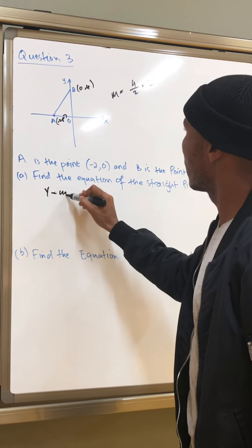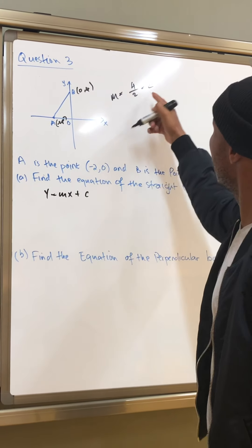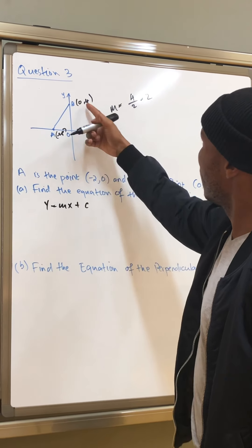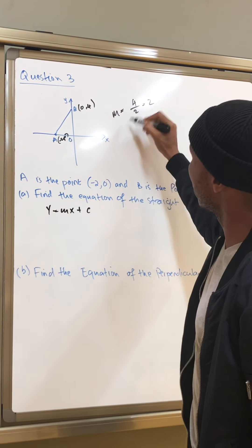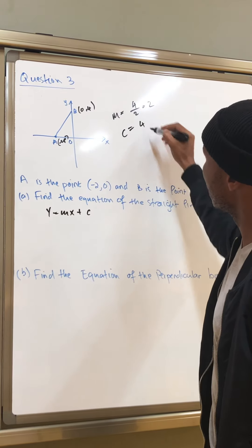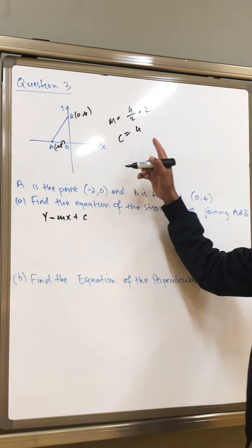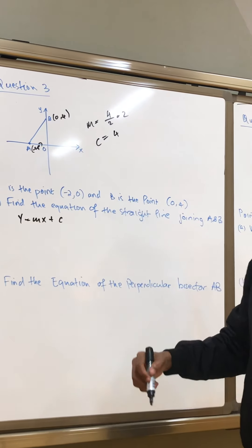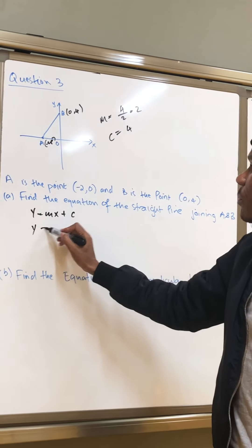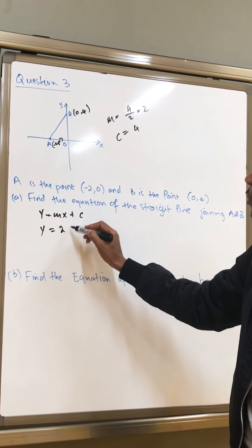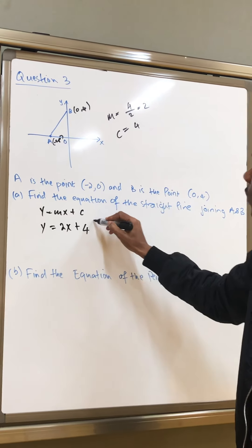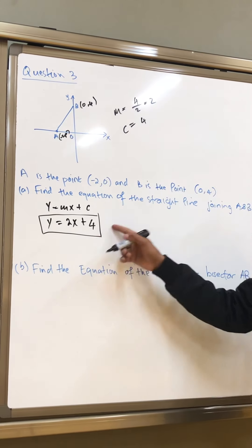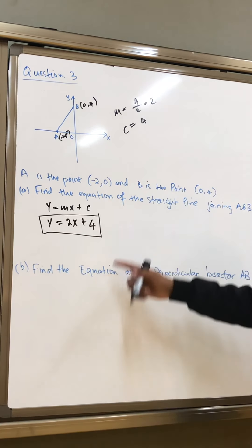Find the equation of the line. So now, y is equal to mx plus c. And my gradient there is 2. And my c here, don't forget, your c here is 4. c is where the line passes or crosses the y-axis. So here, that would be y is equal to 2x plus 4. That's my equation. And now, look at the equation, the question that follows.